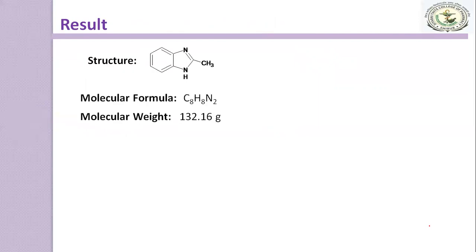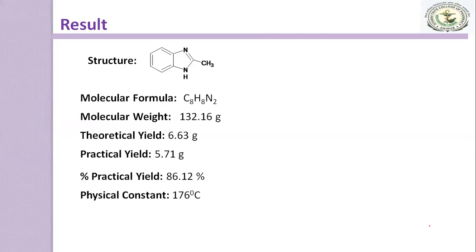After that, you have to just write down the result. For that, you have to draw the structure, then molecular formula, molecular weight, theoretical yield, practical yield, percent practical yield and its physical constant that is melting point and use. Here, 2-methylbenzimidazole is used as anthelmintic.